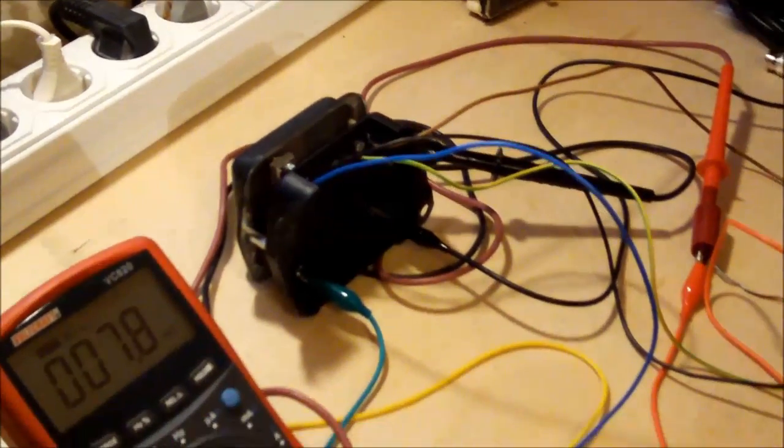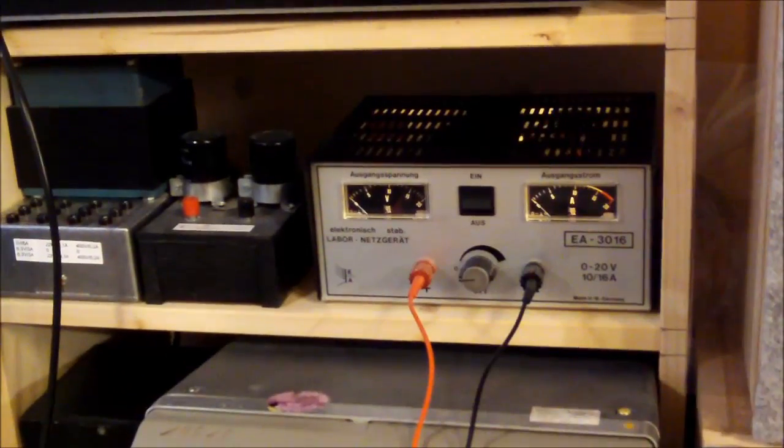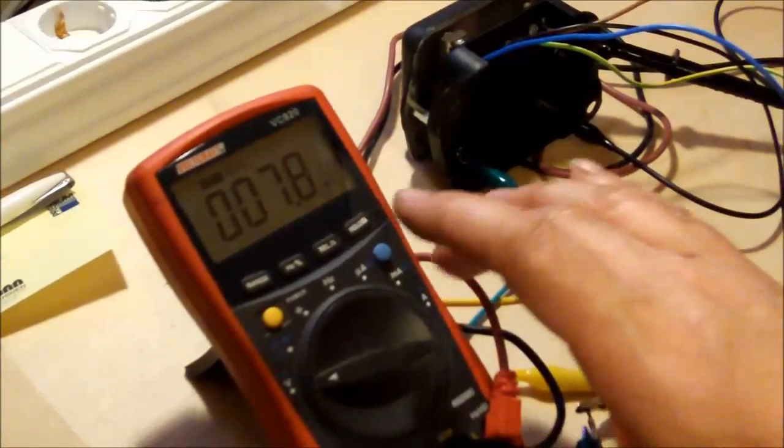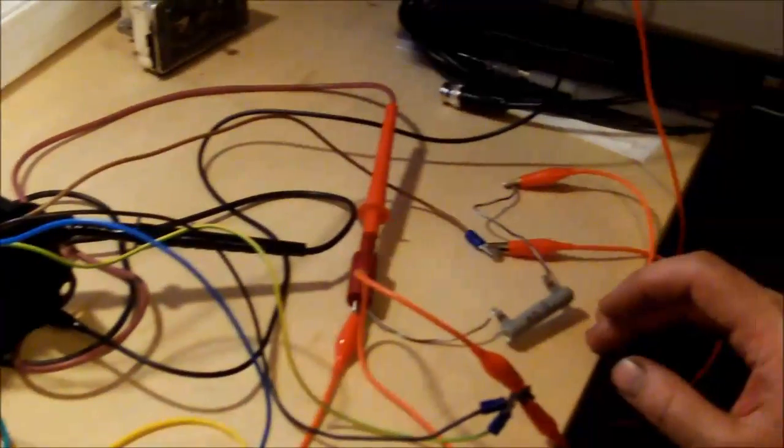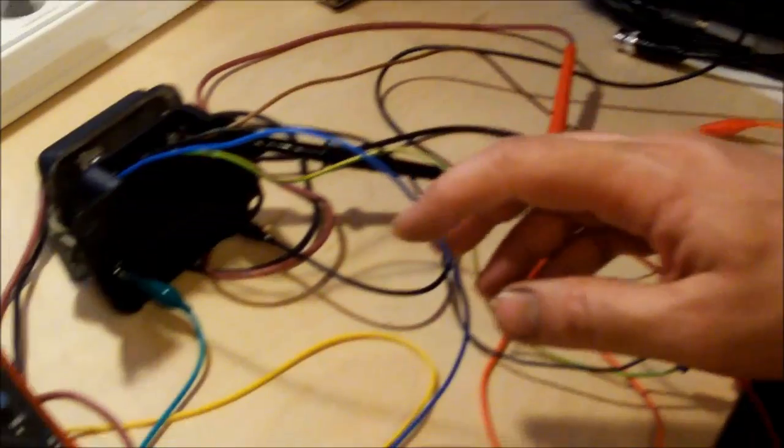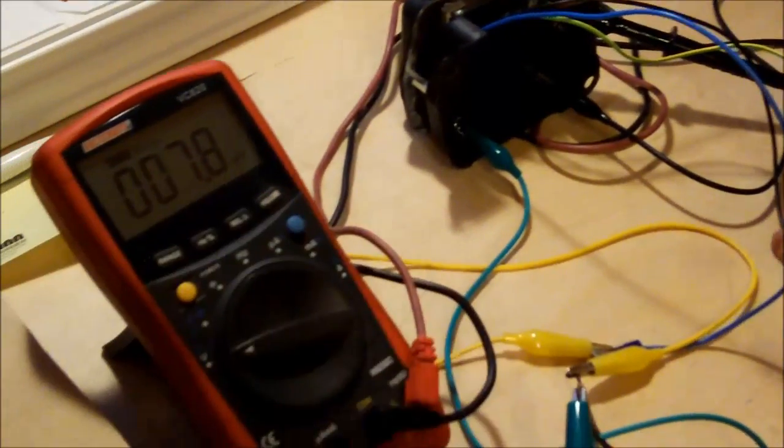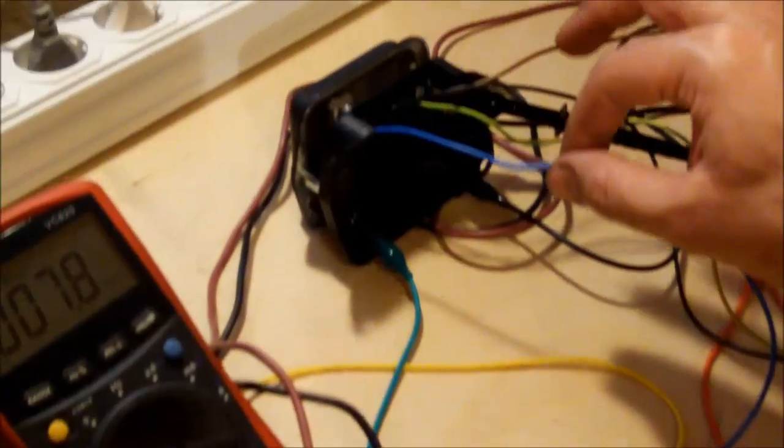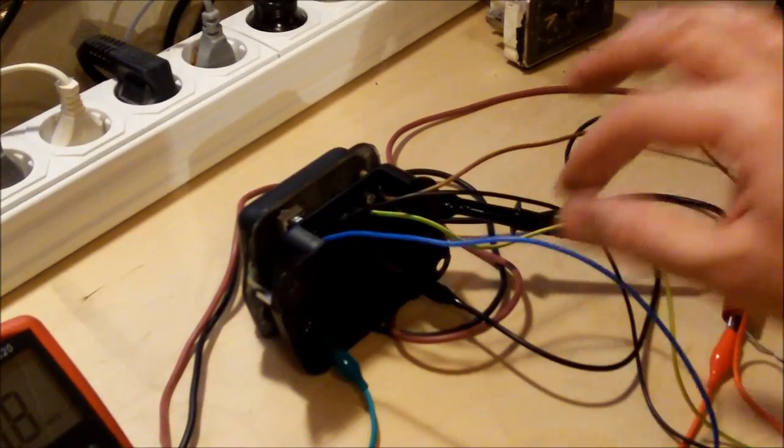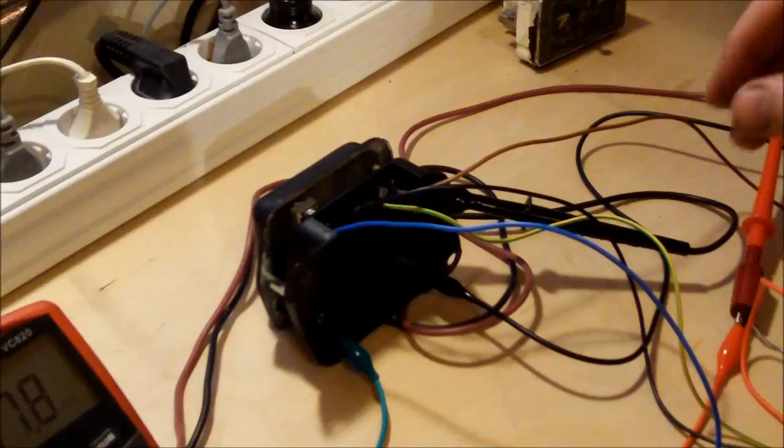Now we have the adjustable power supply. We have the multimeter here and the setup is like this. We have a simple 12 volt bulb connected to the field output of this regulator.